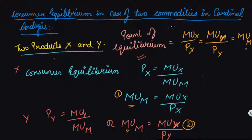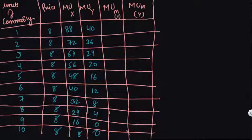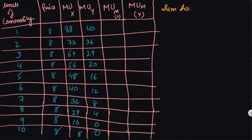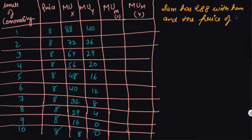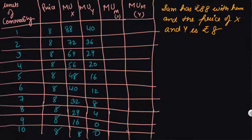Let's understand this with the help of an example. We have made a table where units of commodities are given, price is given, and marginal utility of X and Y is given. It is written in the question that Sam has rupees 88 with him, and the price of both X and Y is rupees 8 each — the price of X and Y is the same in the market.